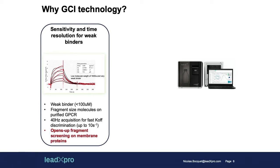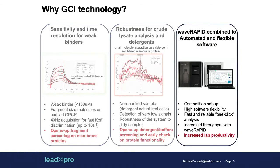First, we evaluated the sensitivity of the instrument, and the sensitivity turns out to be extremely high. We were able to record weak binders of very small size — for example, in this graph on the left, you can see a binder which is double digit micromolar on the GPCR, and we were really able to still record the kinetic data of this compound.